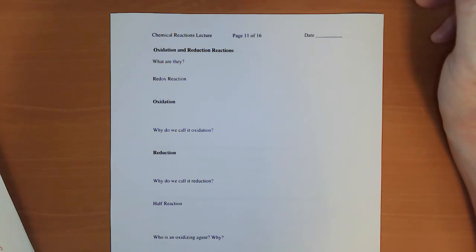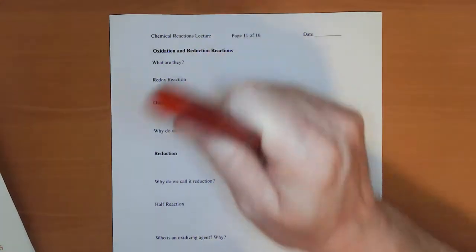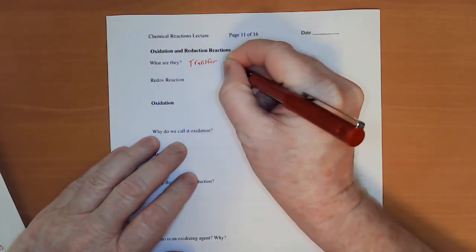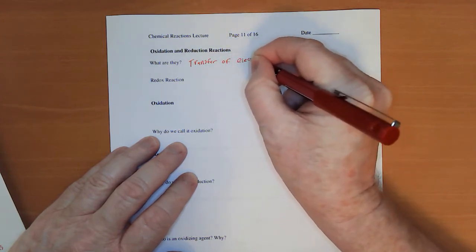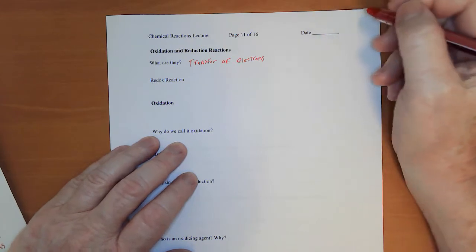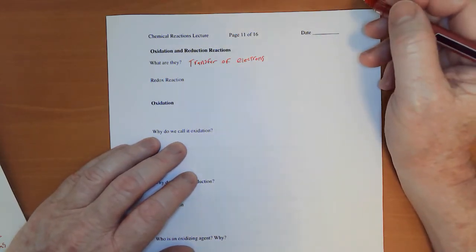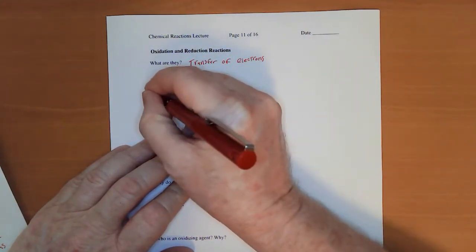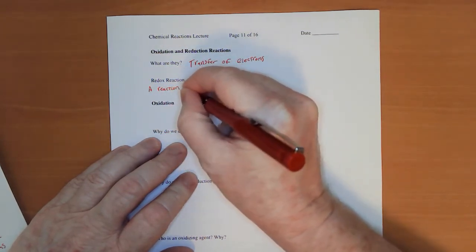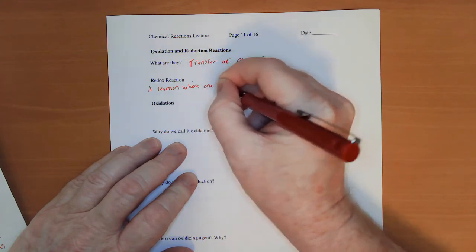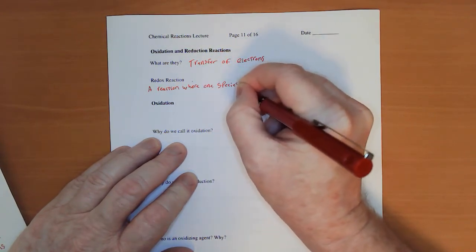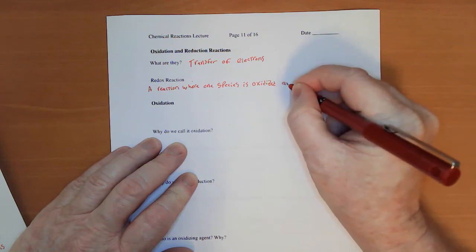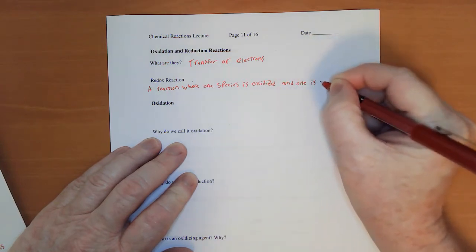So what are oxidation and reduction reactions? They are a transfer of electrons. Acid and base reactions were transfer of protons. Redox reactions are transfer of electrons. So a redox reaction is a reaction where one species is oxidized and one is reduced.